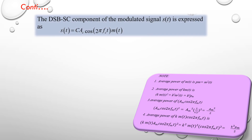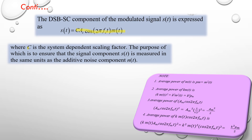We know that the DSBSC component of the modulating signal s(t) is expressed as s(t) = C × A_c × cos(2πf_c t) × m(t), where C is the system-dependent scaling factor, the purpose of which is to ensure that the signal component s(t) is measured in the same units as the additive noise component n(t). A_c is the carrier signal amplitude and cos(2πf_c t) is the carrier signal frequency term, and m(t) is the modulating signal.